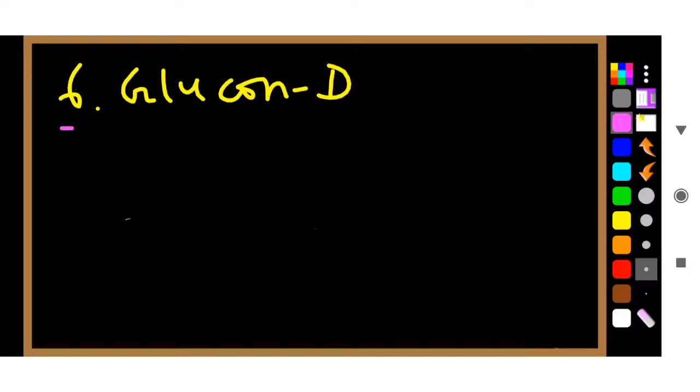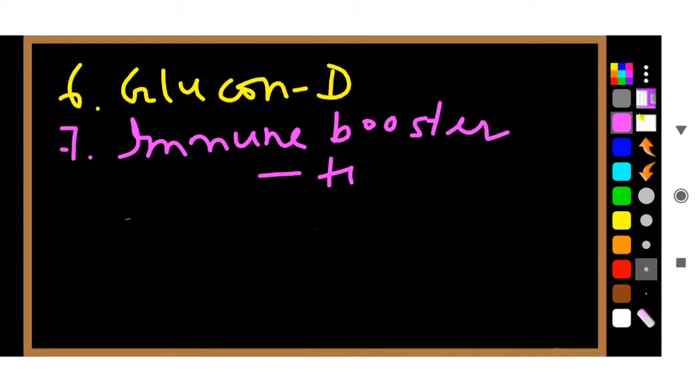Number seven: you can take any kind of immune booster. An example of immune booster is turmeric milk. You can take turmeric milk, which is also very important.